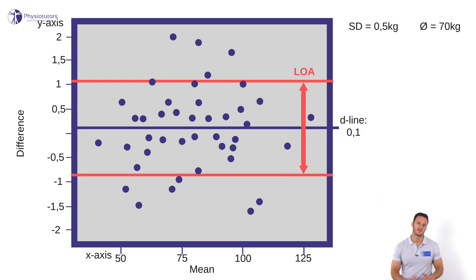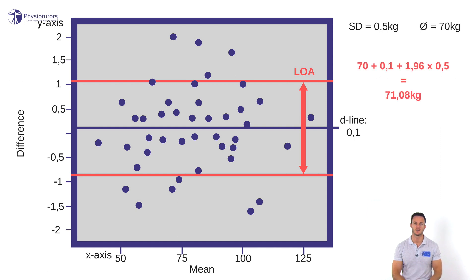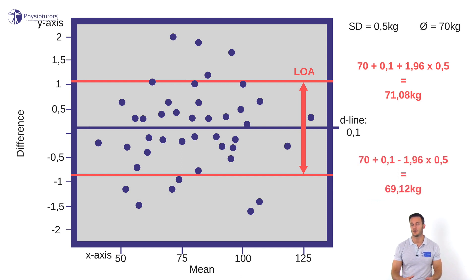So in our example, let's say that the mean of our weight measurements was 70 kilograms with a standard deviation of half a kilogram. Then the upper limit of agreement would be 70 plus D (0.1) plus 1.96 times the standard deviation, ending up at around 71.08 kilograms. The lower limit of agreement would be 70 kilograms plus D (100 grams) minus 1.96 times the standard deviation, giving a lower limit of 69.12 kilograms.